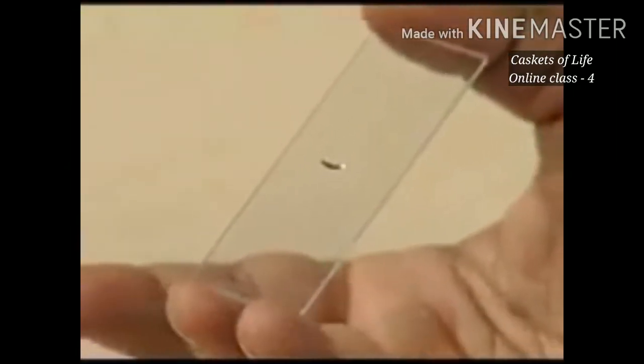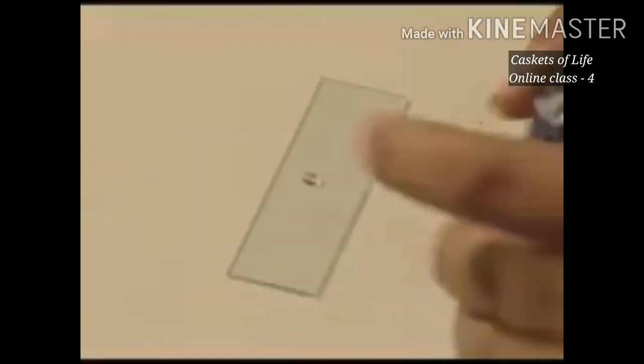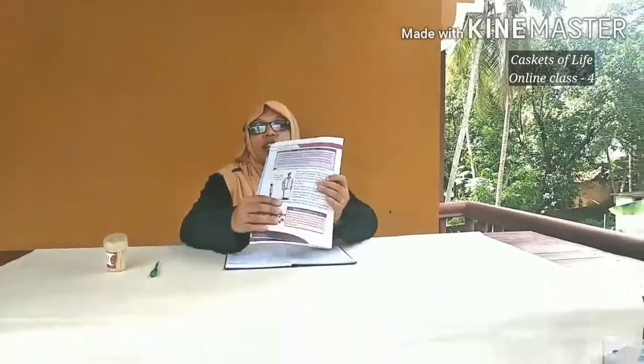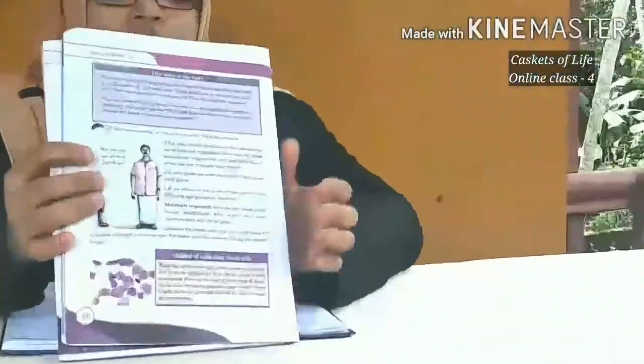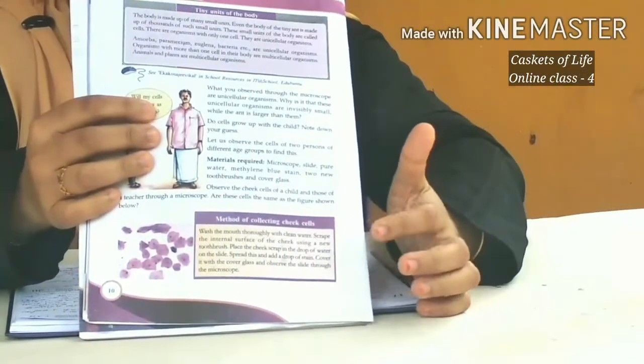Now let's start our experiment. First we take a drop of water onto our slide. Now we need our cheek cells — we need to collect the cheek cells. Before that, there is a reading note given in our textbook page number 10. This is how we can collect the cheek cells.